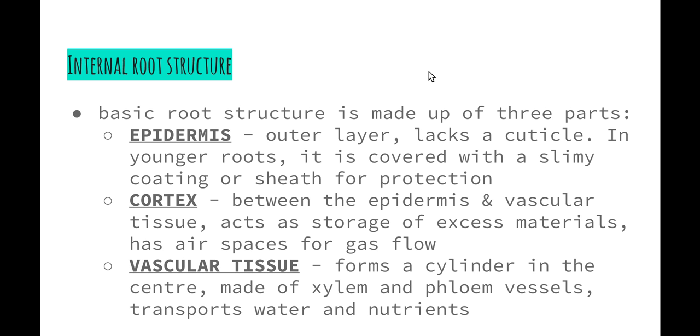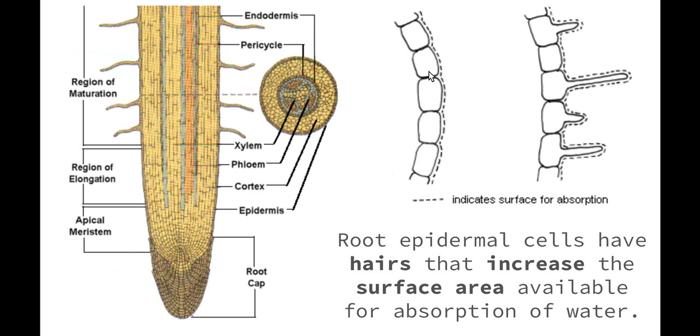Then we have the vascular tissue, which forms a cylinder in the center and is made of xylem and phloem vessels. Their job is to transport water or nutrients, depending on which vessel we're looking at. We can see here a transverse section, a longitudinal section, and a cross section of a root. The epidermis is the very outside layer. The cortex is between the epidermis and our vascular tissue layers. The vascular tissue is found in the center of the root, with our xylem forming almost a perfect X shape in the middle, and then the phloem vessels being found inside those.